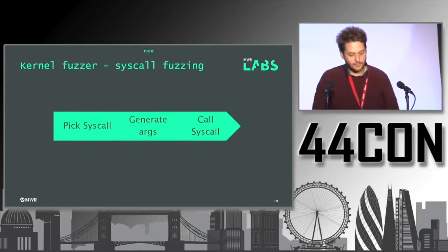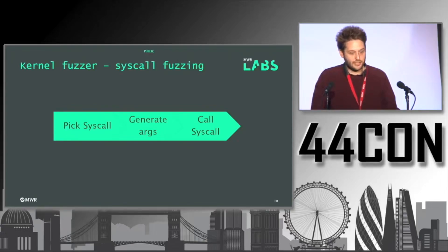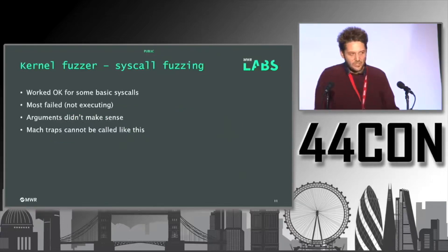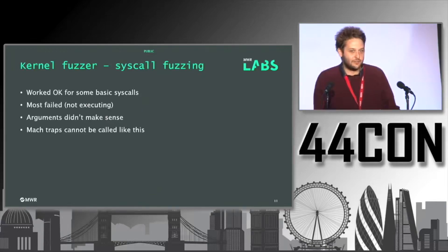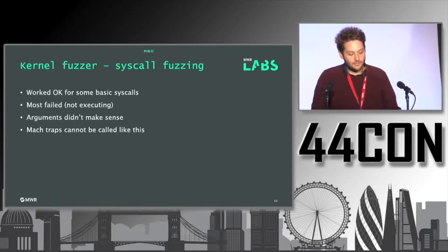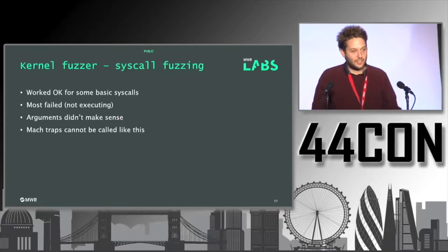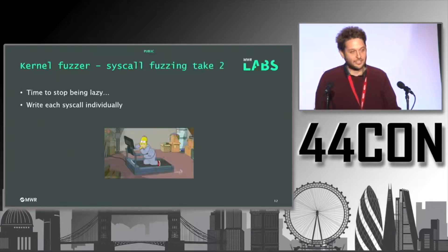Initially this is how a fuzzing run would look: pick a syscall, generate arguments, and call it. Really basic, really easy. It worked okay for simple syscalls expecting just an int or whatever, but the vast majority failed because they were expecting things like structs, which we didn't account for. So we were giving it a void star, the syscall was picking up on that and just dying. The Mach traps just didn't work at all with this approach.